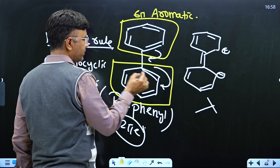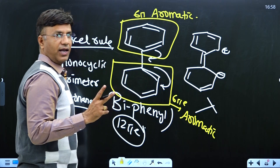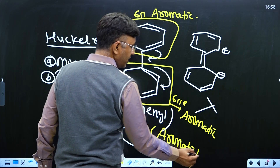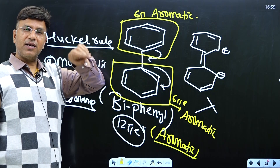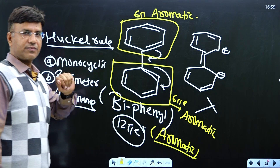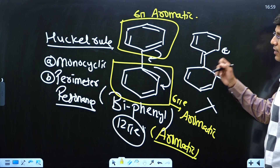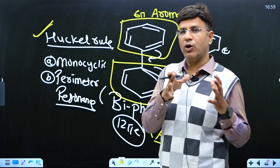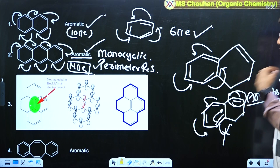Similarly, the other ring has 6 π electrons, cyclic, planar — this ring is also aromatic. Biphenyl has two rings and both individually are aromatic. So overall biphenyl is aromatic. We do not count the complete 12 π electrons — complete π electrons are counted only when there is perimeter resonance. Write in your notes: biphenyl is aromatic and we apply Hückel rule on the individual ring. This is a very important concept that can be asked in exams.